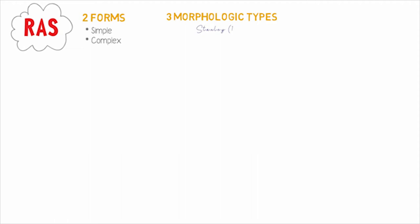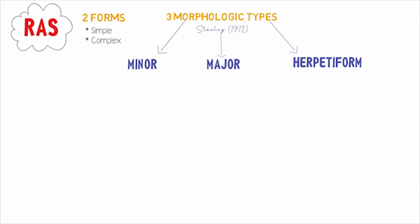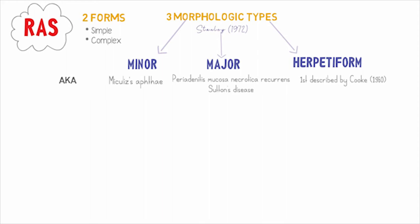Complex RAS involves oral as well as other lesions — for example, genital lesions — which are more painful, persistent, and debilitating. The three morphological types as described by Stanley in 1972 include major, minor, and herpetiform RAS. For ease of understanding, we will discuss the characteristics of each in a tabular format. Minor RAS is also known as Mikulicz aphthae, and major RAS was previously known as periadenitis mucosa necrotica recurrens or Sutton's disease. The herpetiform type was first described by Cooke in 1960. Major and minor RAS forms usually occur equally in females and males.